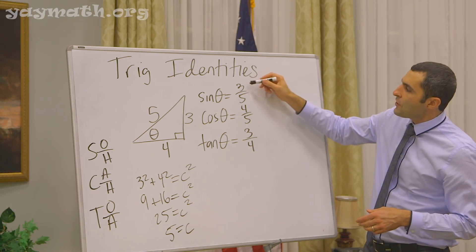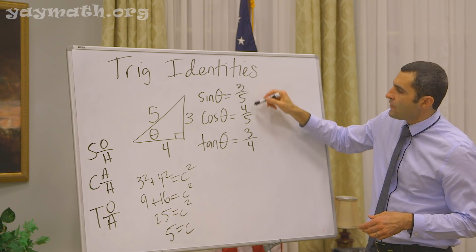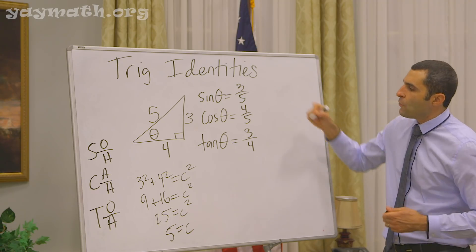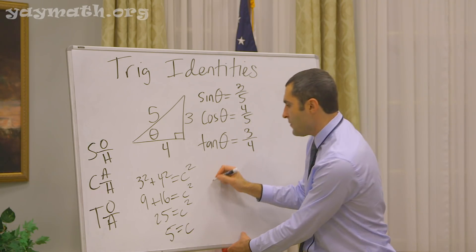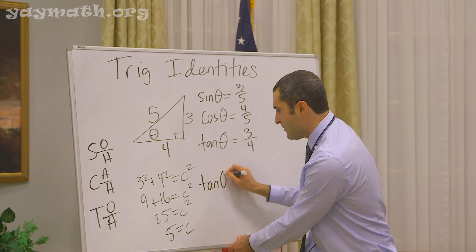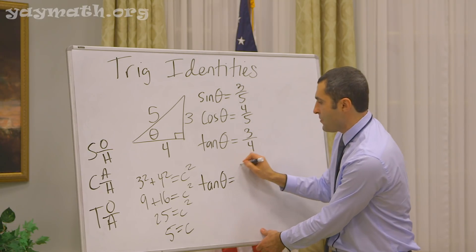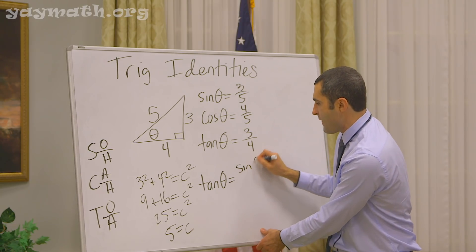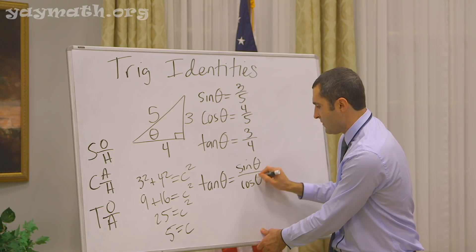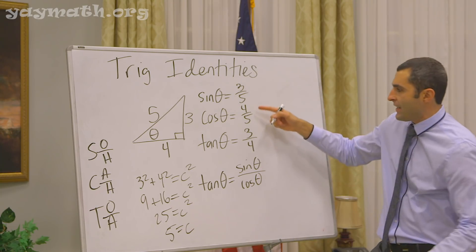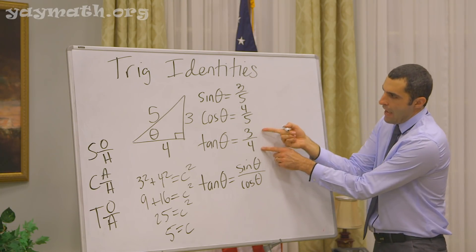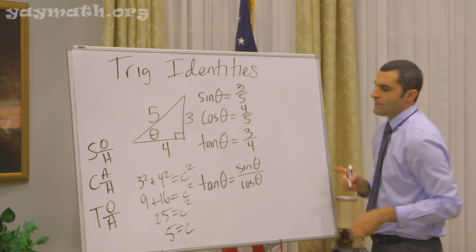Now, if you look closely in here, we could come up with one identity. One of them that works — I'm going to prove it to you — is that tangent of an angle is actually equal to sine of that angle divided by cosine of that angle. You see it's 3 over 4? And you see there's 3 over 4 hiding in here?